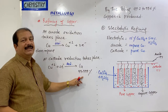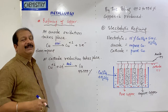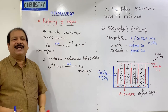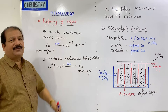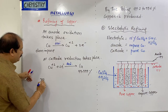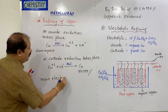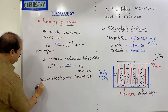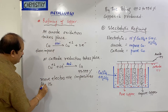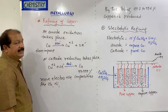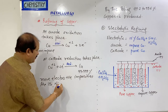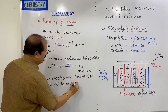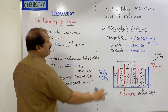Now here there are some impurities. More electropositive impurities like zinc, iron, and nickel are more reactive, so they dissolve into the electrolyte. These more electropositive impurities — zinc, nickel, and iron — dissolve in the electrolyte solution.